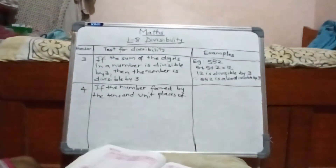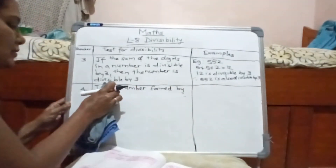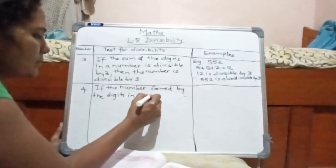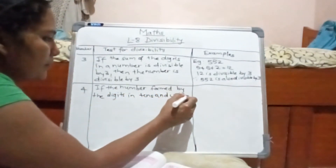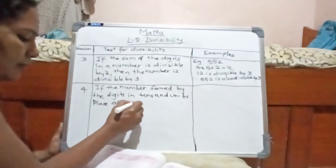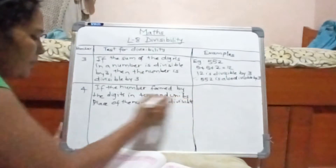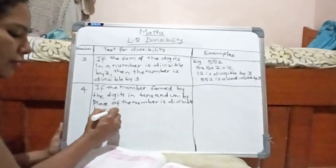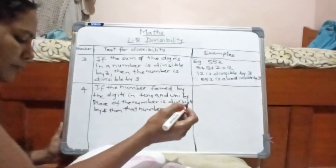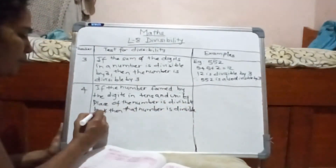For divisibility by 4: if the number formed by the digits in the tens and units place of the number is divisible by 4, then that number is divisible by 4.